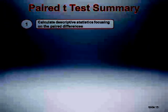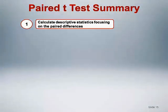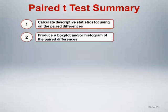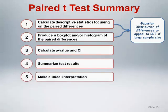In summary, to perform a paired t-test: calculate descriptive statistics focusing on the paired differences; produce a box plot and/or histogram of the paired differences. These numerical and graphical summaries should be used to assess the Gaussian distribution assumption. Provided that assumptions are satisfactorily met, calculate the p-value and confidence interval, then summarize the test results addressing both the statistical and clinical significance of the results.